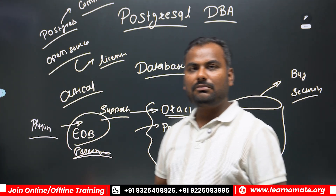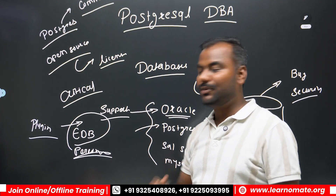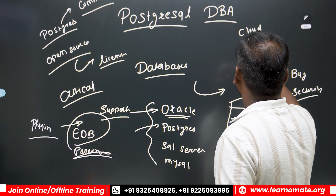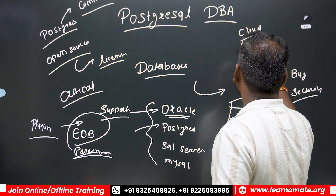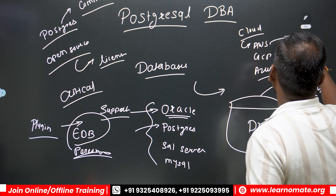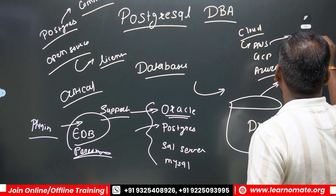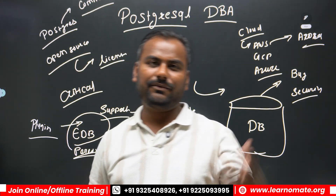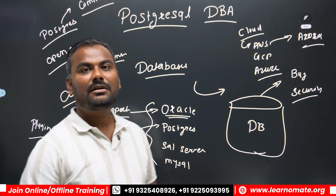We have core PostgreSQL which is completely free, and if you need support you can go with EDB. You can also use cloud-specific services for PostgreSQL — AWS, GCP, and Azure all support it. AWS even has its own PostgreSQL flavor called AWS Aurora, which has a similar architecture to PostgreSQL but is a kind of flavor of it.